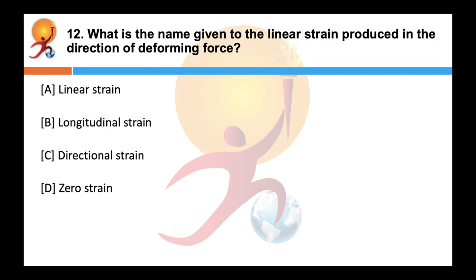What is the name given to the linear strain produced in the direction of the deforming force? Correct answer is longitudinal strain. If the deforming force produces a change in length alone, the strain is called linear strain or tensile strain. If this linear strain is in the direction of the deforming force, it is called longitudinal strain. If it is in a direction perpendicular to the force, it is called lateral strain.